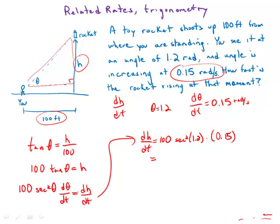When I multiply all that out on a calculator, I get something like 114.239 feet per second. So at that moment, the rocket is rising in the air at a velocity of over 100 feet per second, 114 feet per second.